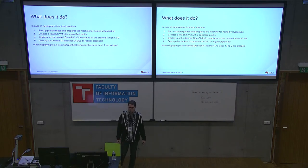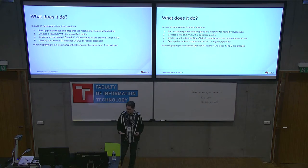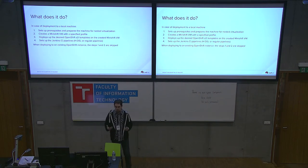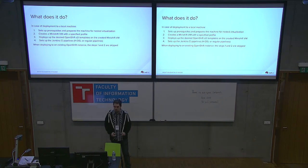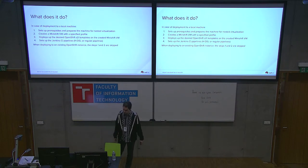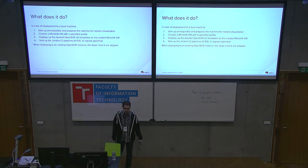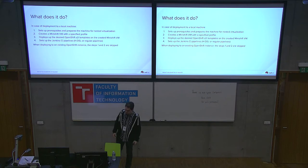After that, we process the OpenShift templates so we can modify them if you need some custom variables injected. We process them, prepare them, verify them, and then start deploying them — so you start building images, preparing deployments, the build configs, and everything. And after that, optionally, you set up the Jenkins CI pipelines — either HDSL or regular pipelines — and include shared libraries if you need.